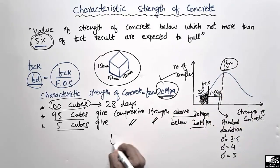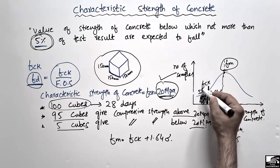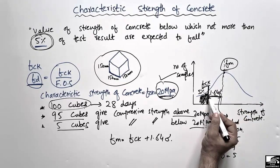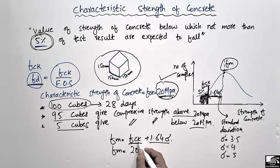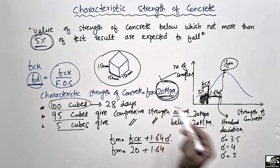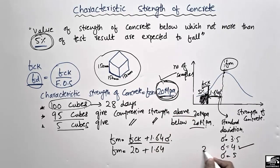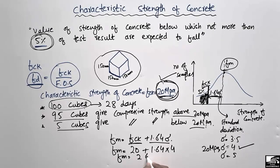The mean strength can be found by the formula: mean strength = FCK + 1.64 × sigma. For example, if FCK is 20 megapascal, the standard deviation sigma is 4. So the mean strength equals 20 + 1.64 × 4, which comes out to approximately 26.56 megapascal. That is the mean strength for concrete with a characteristic strength of 20 megapascal.